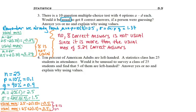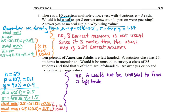We were looking for 5 lefties, and 5 is usual because it's inside the range. So now I answer the question: would it be unusual to find 5 lefties? No, it would not be unusual to find 5 left-handed students since 5 is inside the usual range of -0.5 to 5.5.